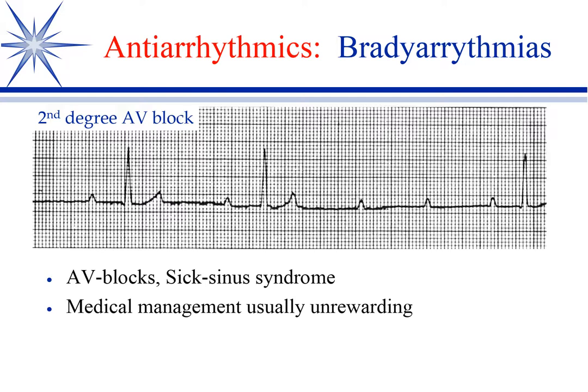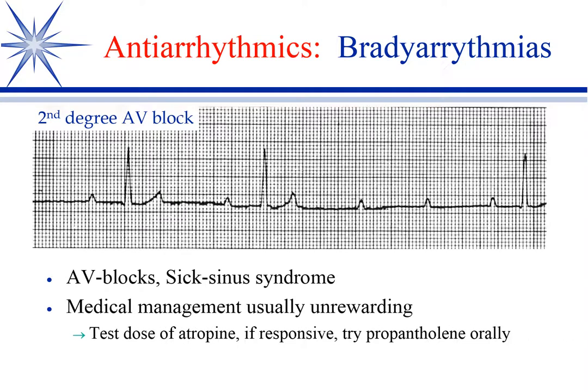We will try to manage bradyarrhythmias medically by giving a test dose of atropine. If the heart rate picks up, we may use an oral parasympatholytic called propantheline, which acts basically identical to atropine but is oral. You have to give really large doses of atropine orally for it to have an effect. Mostly, though, this is going to require pacemaker surgery — most of these are not that responsive, but we do put pacemakers in.